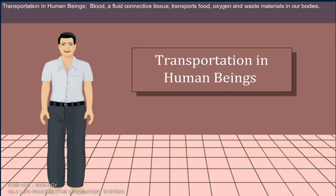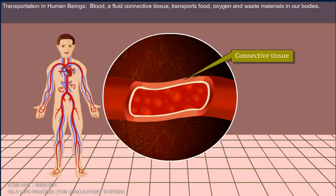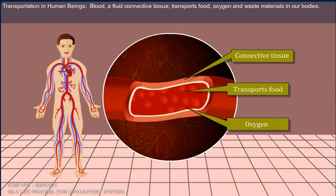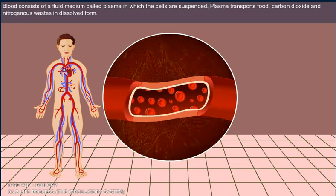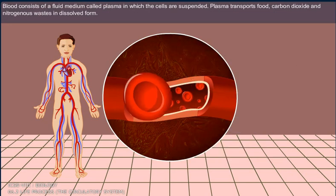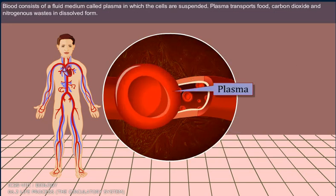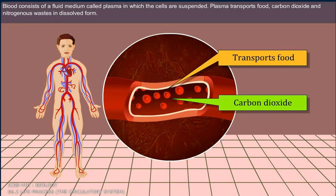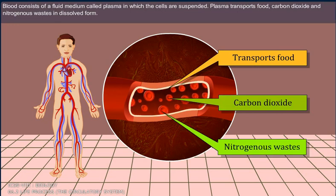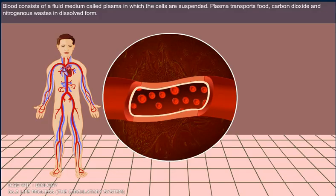Transportation in human beings: Blood, a fluid connective tissue, transports food, oxygen and waste materials in our bodies. Blood consists of a fluid medium called plasma in which cells are suspended. Plasma transports food, carbon dioxide and nitrogenous wastes in dissolved form.